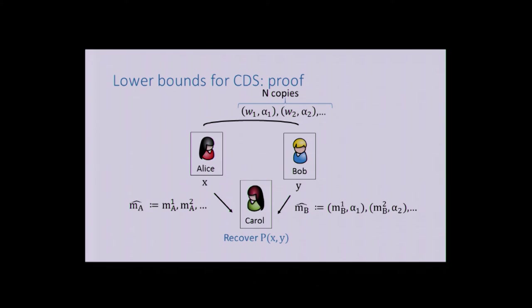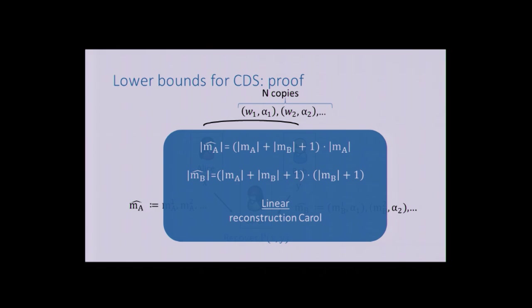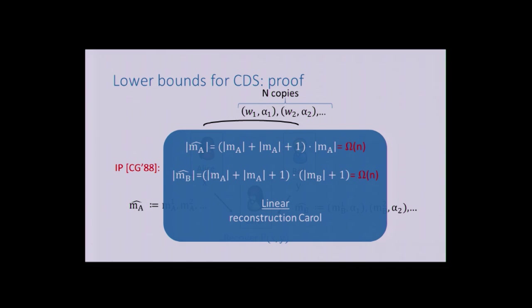So here is our communication complexity protocol. The size of MA-hat is N times the original MA size, and MB-hat is N times the original MB size plus 1 for the alphas. Big N depends on the reconstruction function Carol; fixing Carol to be linear gives exactly the lower bound stated in the informal theorem. Plugging in the communication complexity lower bound gives the result for inner product, which concludes the talk.